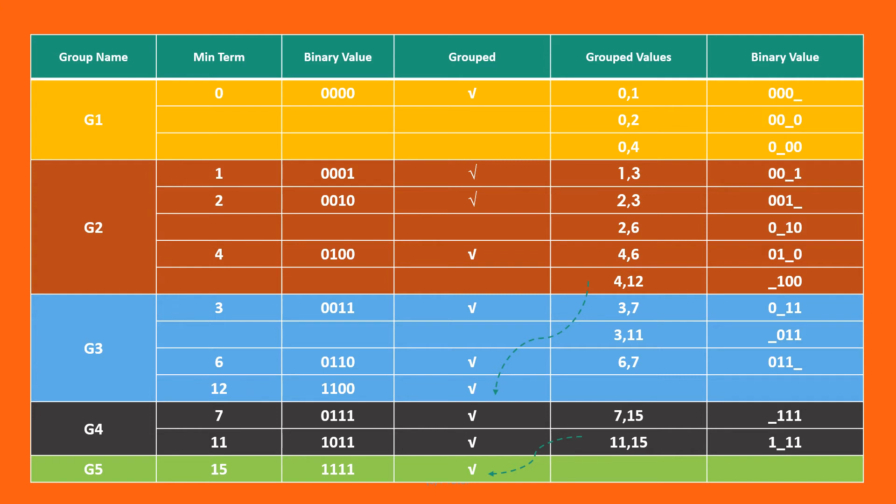Here minterm 12 is not grouped with adjacent group element 7 or 11, but since it's already grouped with 4 a tick mark is placed. Similarly there is no adjacent group for 15 but it's already grouped with 7, thus a tick mark is placed.